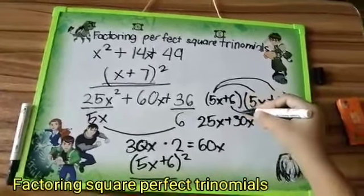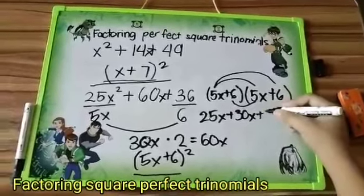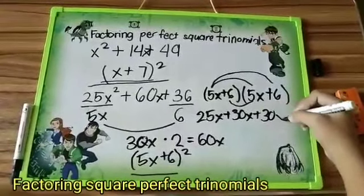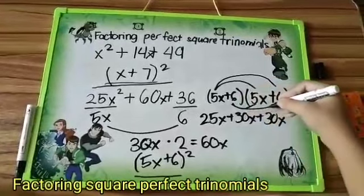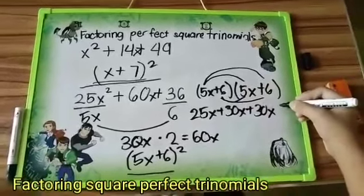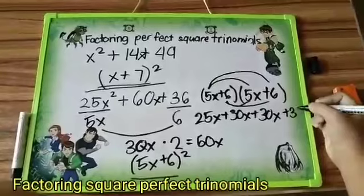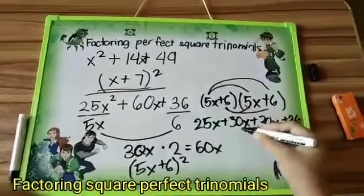6 multiplied by 5x is equals to 30x, then 6 multiplied by 6 is equals to 36. Now these two have the same numbers.